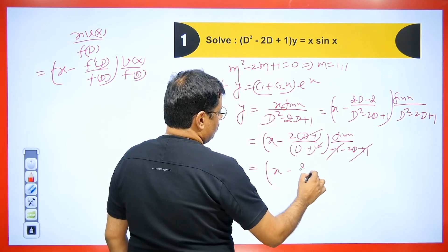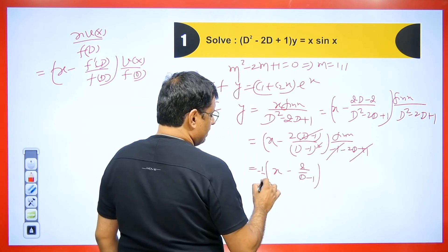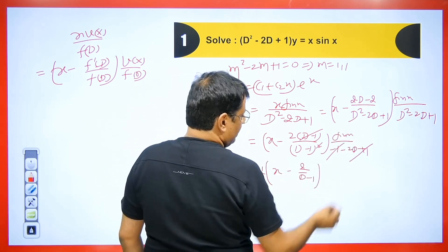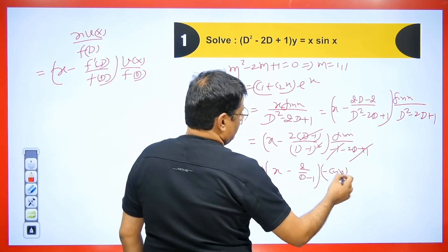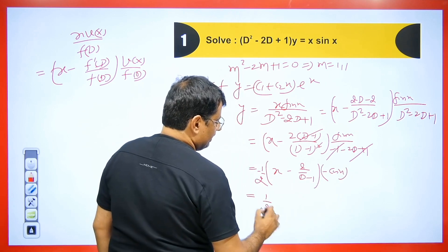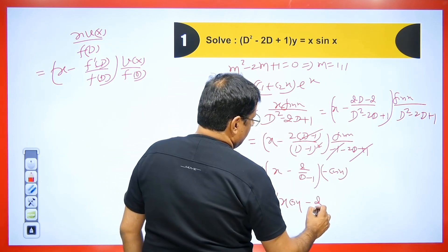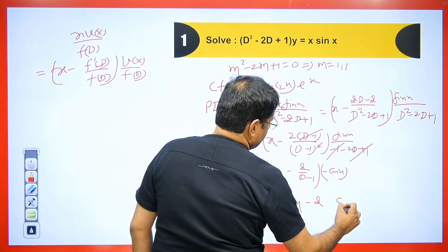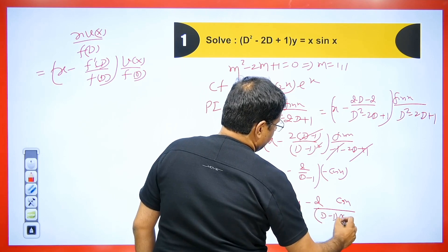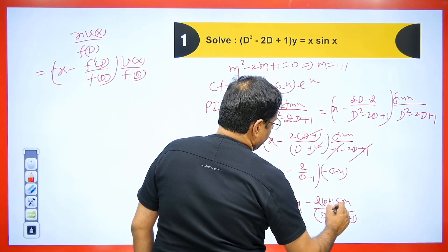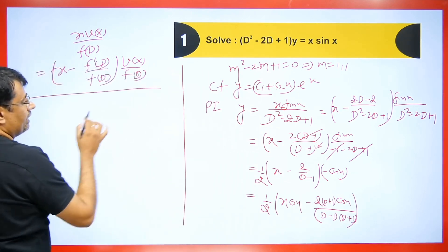This becomes x minus [2/(D−1)]. Taking (1/2) in front of the expression, we have (1/D): the integration of sin(x) gives −cos(x), so minus-minus becomes plus. Multiplying cos(x) inside gives x·cos(x) minus 2. So we get cos(x)/(D−1). We will rationalize this by multiplying numerator and denominator by (D+1), then we will get the value of PI.